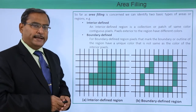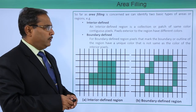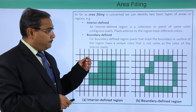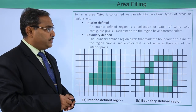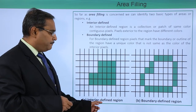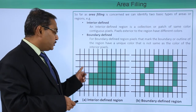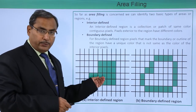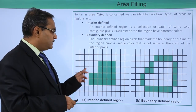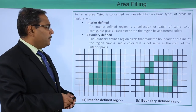The first one is the interior defined region. An interior defined region is a collection or patch of same color contiguous pixels, and pixels exterior to the region have some different colors. Consider this interior defined region — some pixels have the same color, and the rest, not falling within this, will have some different colors. They will be treated as exterior pixels, and these pixels will be treated as interior.